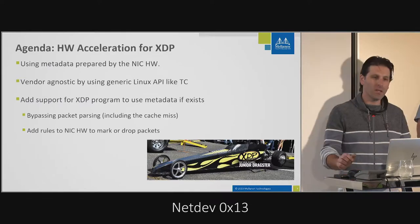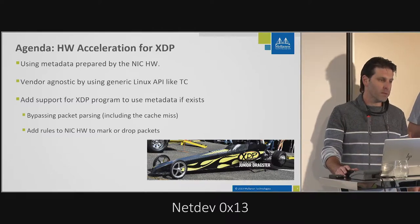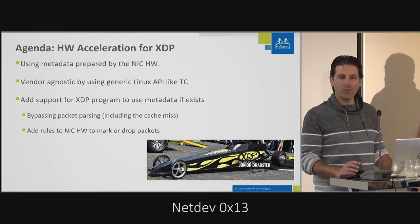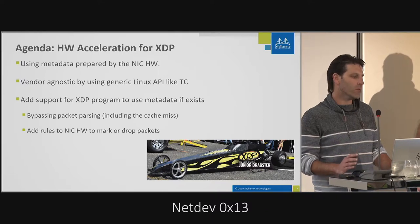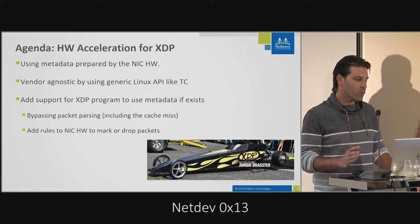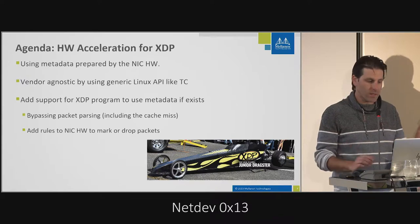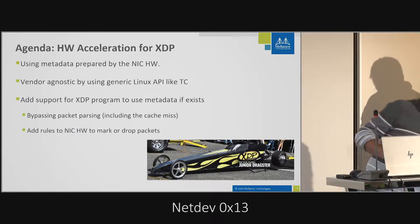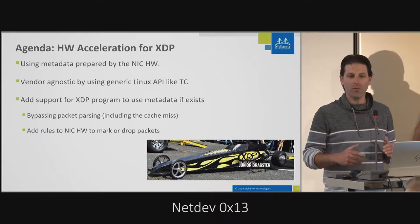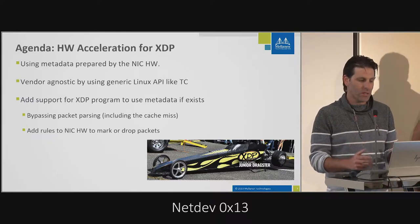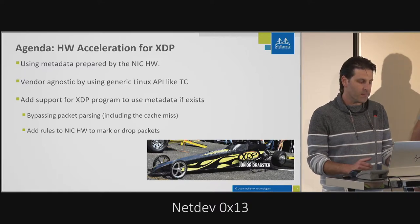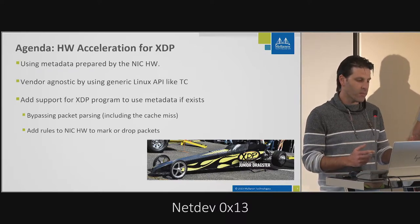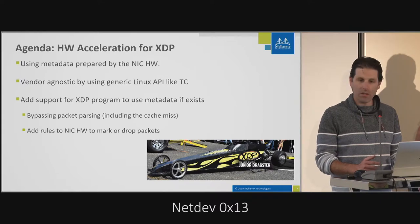We're going to talk about hardware acceleration for XDP. Mainly we want to use acceleration of XDP, not for offload yet. What we want to do is use metadata prepared by the NIC hardware. It will be vendor agnostic, with a generic API to XDP, something like TC. With metadata, we can save the parsing of the packet and also save the cache miss included in that.